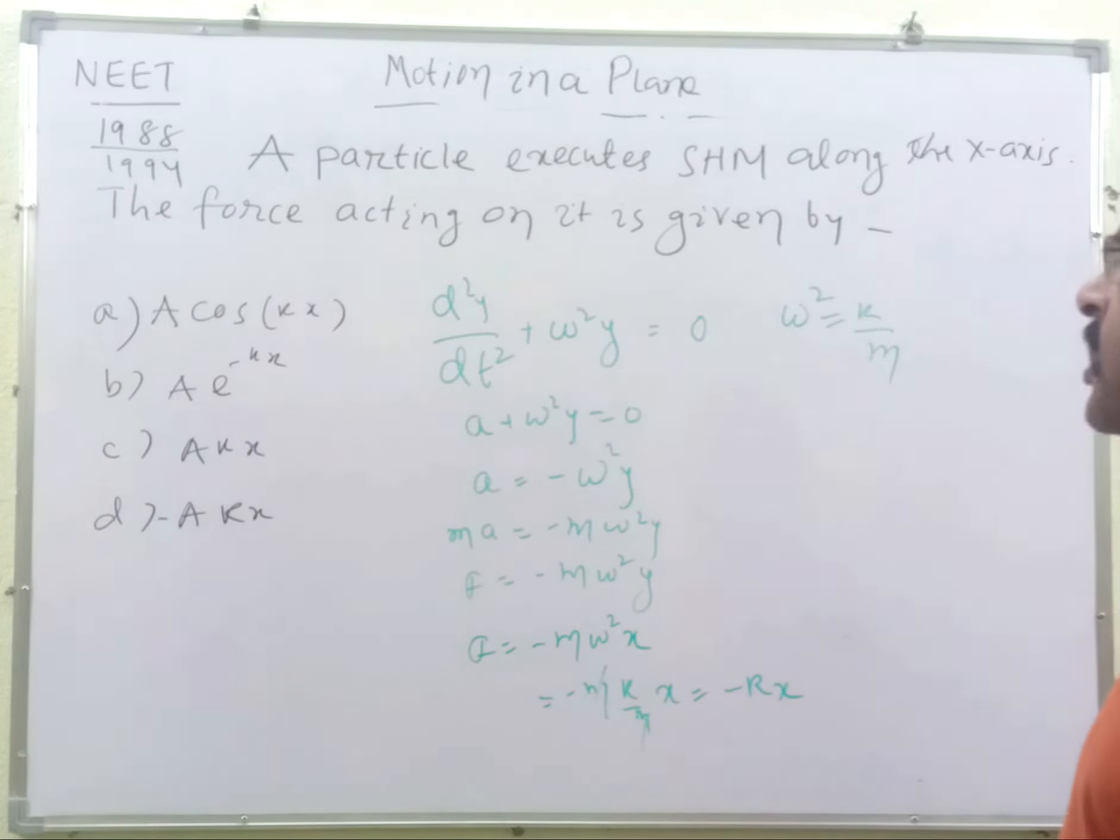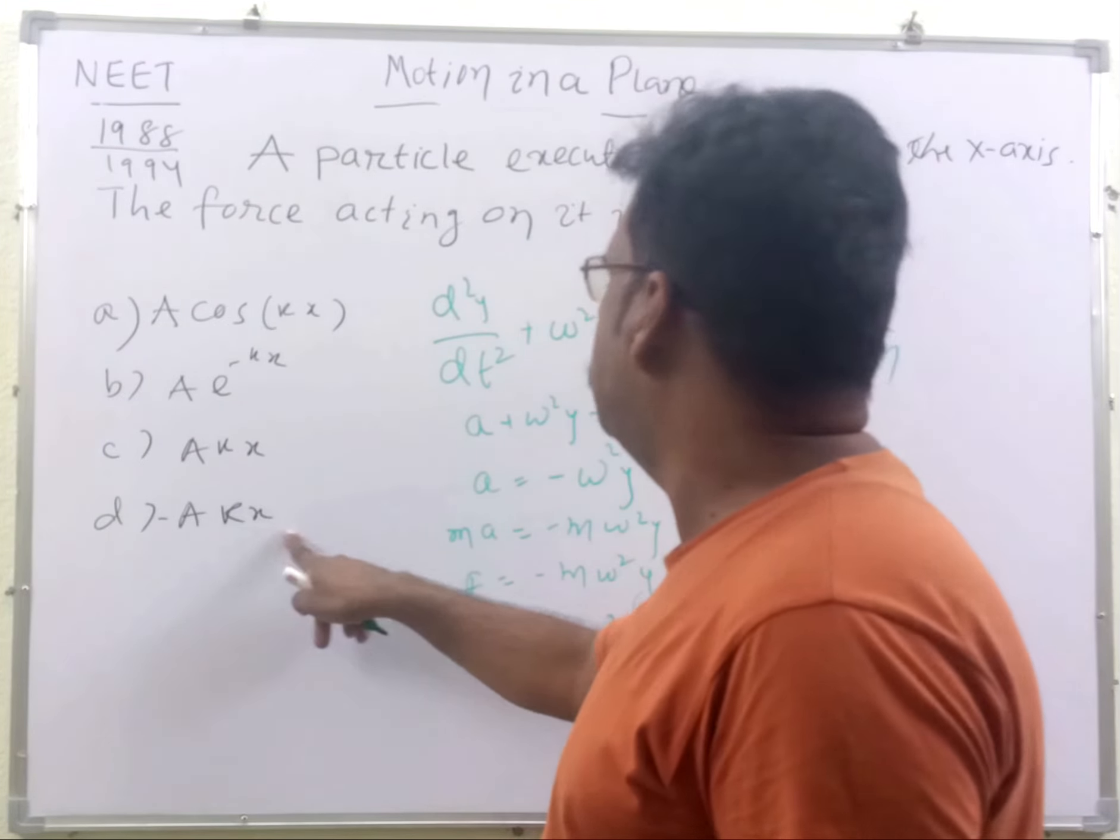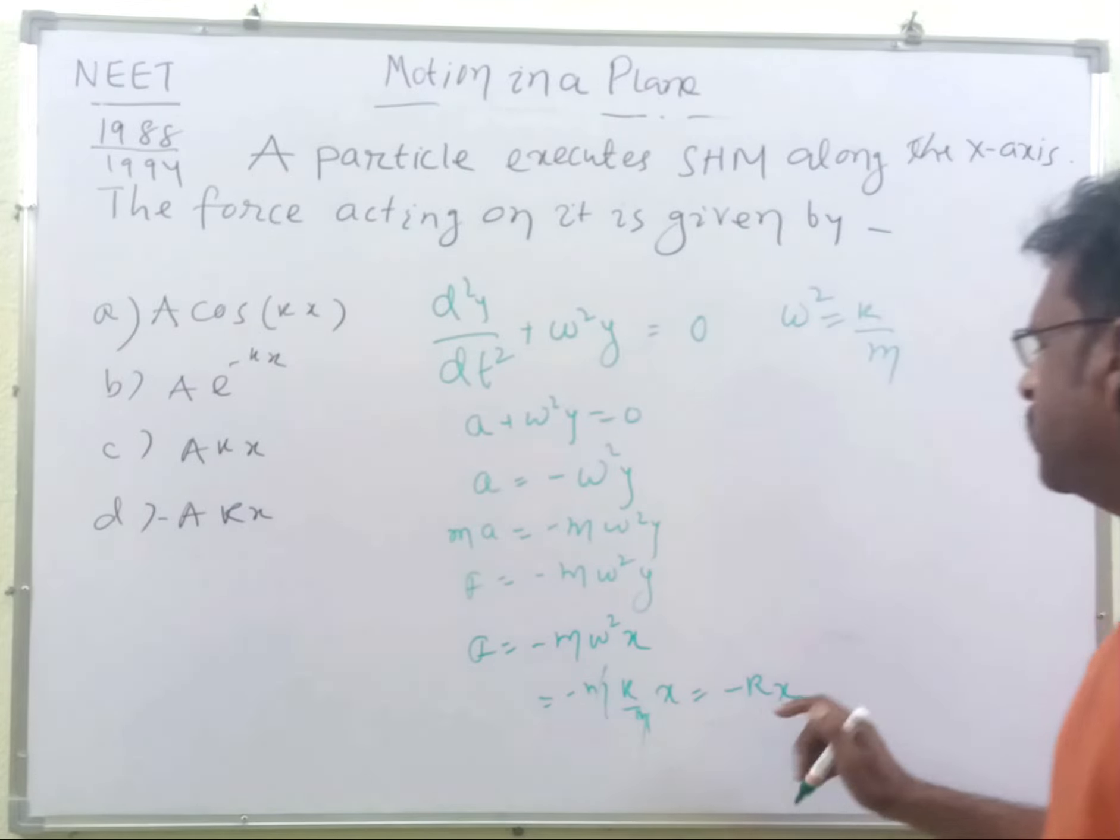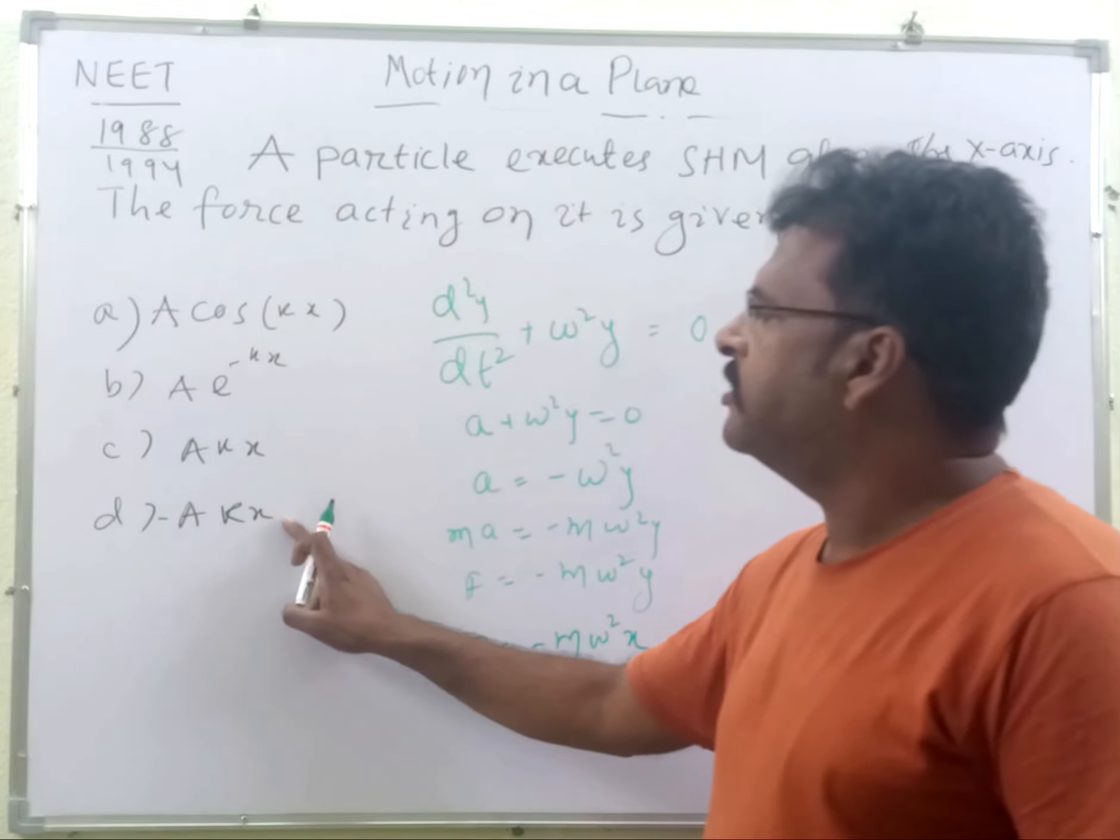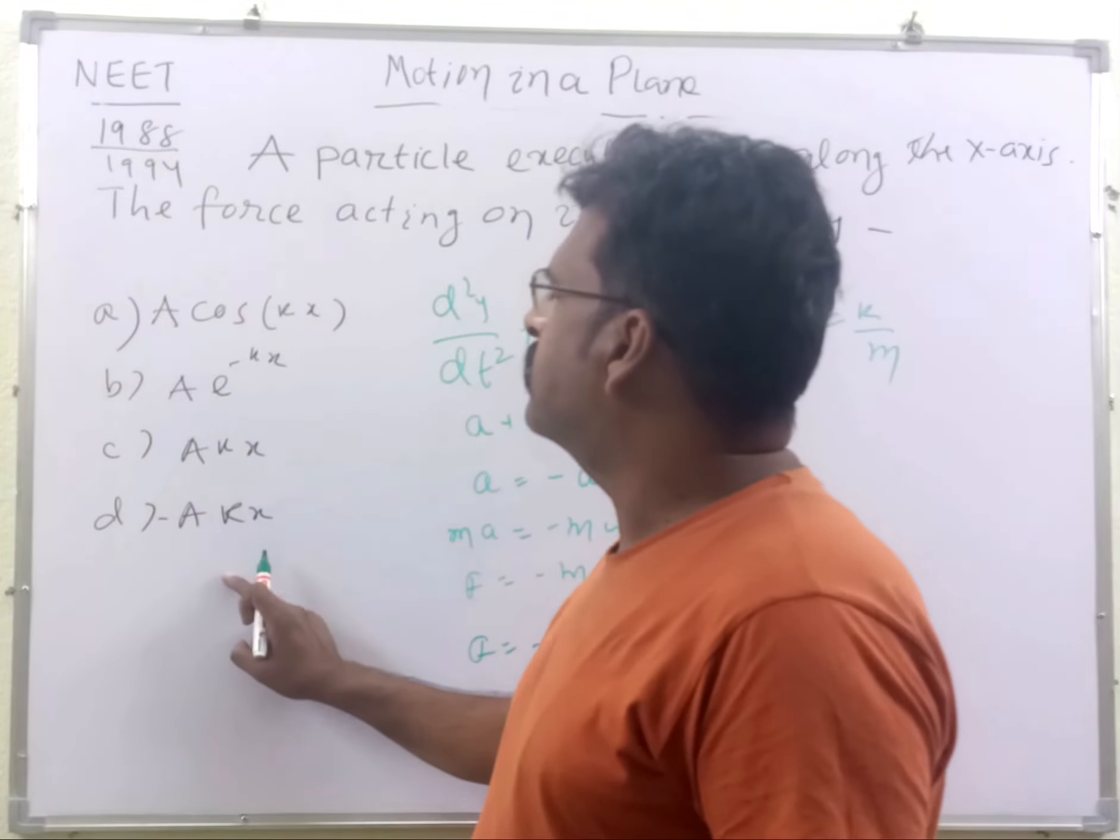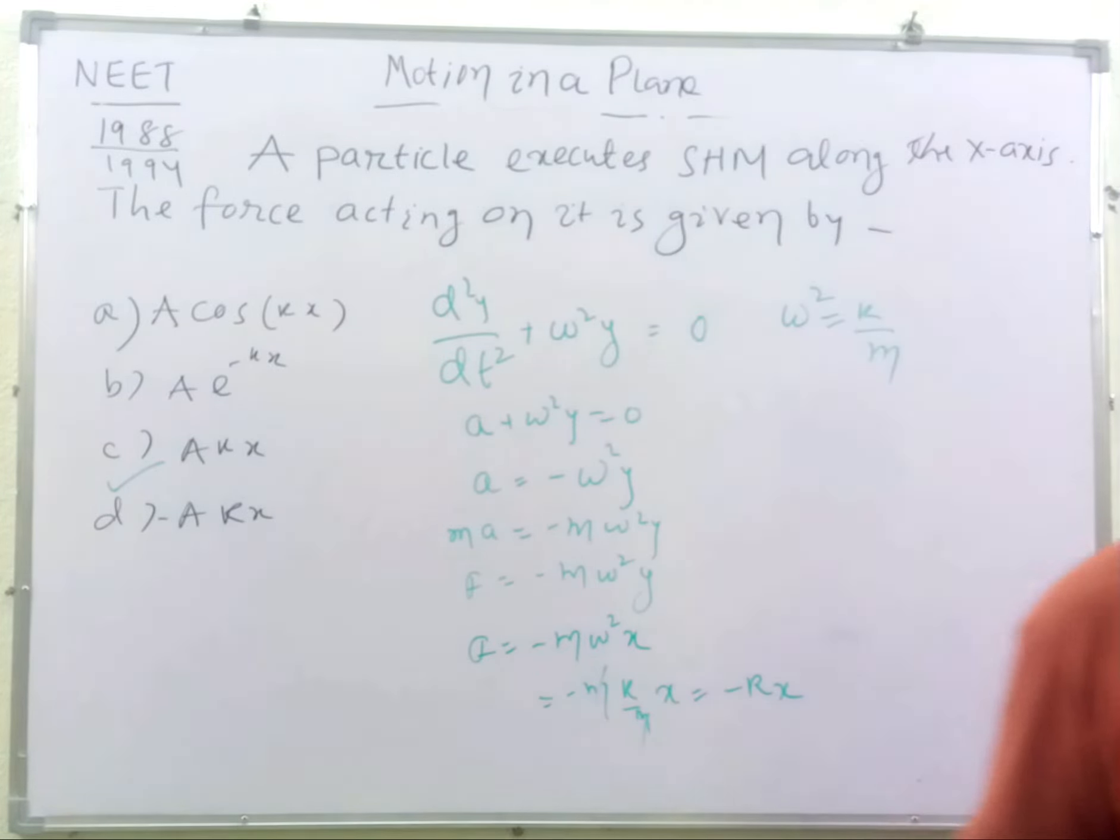So here in the options, the nearest option is -akx. Here 'a' may be multiplied, which may be a constant, and the force may be equal to -akx among the four given options. Option d is correct, students, for this question.